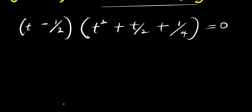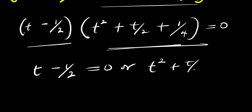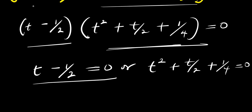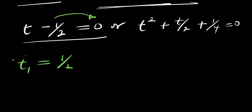So we are going to equate each of these factors to 0. We have t minus 1 over 2 equals 0, or we have t squared plus t over 2 plus 1 over 4 equals 0. Let's solve the first equation to find the first real solution for t. Moving negative 1 over 2 over, we have t equals 1 over 2. This is our t₁, the real solution.